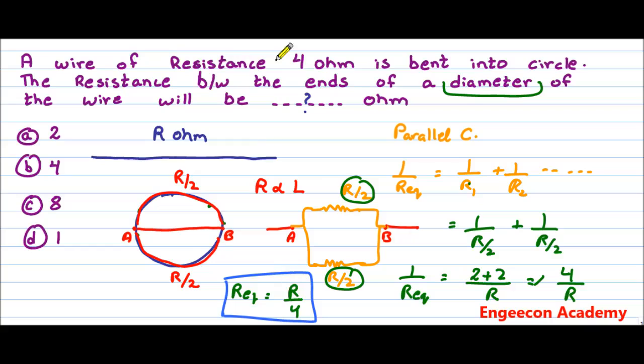For example, here we have resistance equal to 4 ohm. So put this 4 in the equation. We get R equivalent equals 4 divided by 4, and we get an answer of 1 ohm.